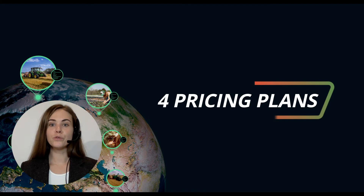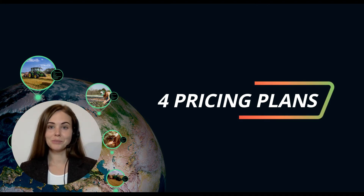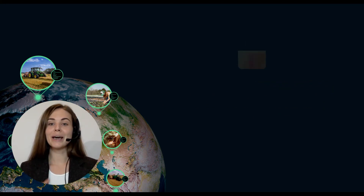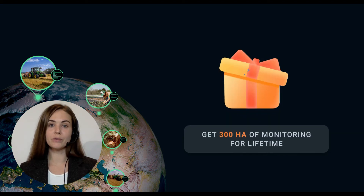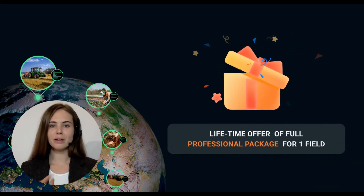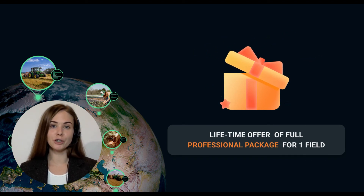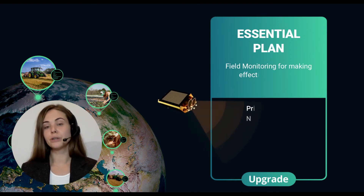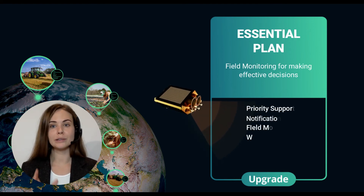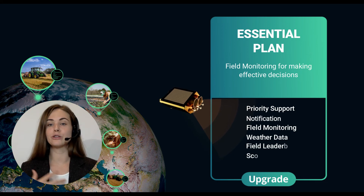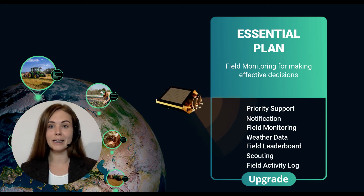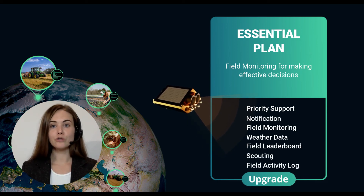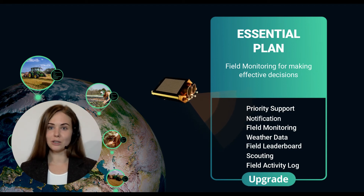We offer four main pricing plans. Right after sign-up, you'll get a free field within a limit of 300 hectares. You can upload your own field and enjoy all the perks of a professional package. The essential plan grants you access to field monitoring, field leaderboard, weather, scouting, notification manager, field activity log, and data manager to ensure that you are making the right farming decisions.